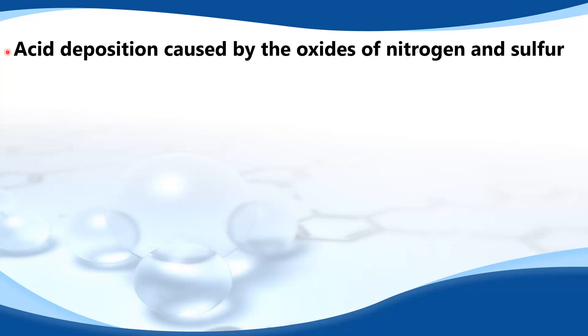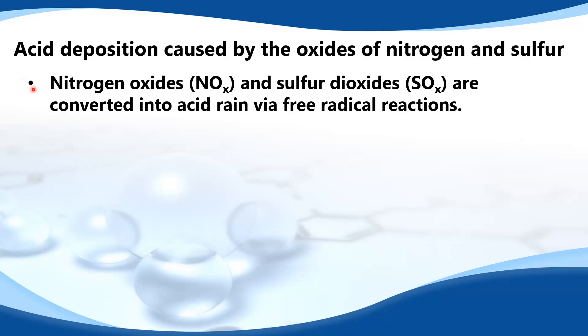Acid deposition is caused by the oxides of nitrogen and sulfur. Nitrogen oxides and sulfur dioxides are converted into acid rain via free radical reactions.